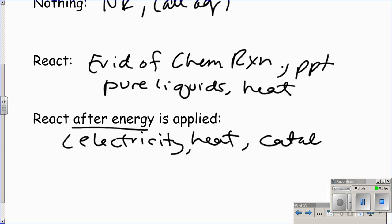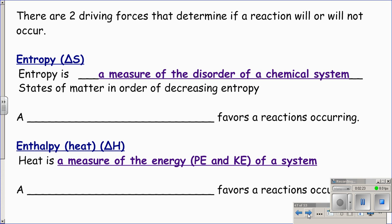Those are the three things we can do to encourage a reaction. If you want to bake a cake, you get all your ingredients, mix them in a bowl, and set it on the counter — but it won't bake by itself. You have to apply energy; you put it in the oven to speed up the chemical reaction with heat. That's a normal everyday example — we know we have to speed up chemical reactions with heat for most cooking needs.